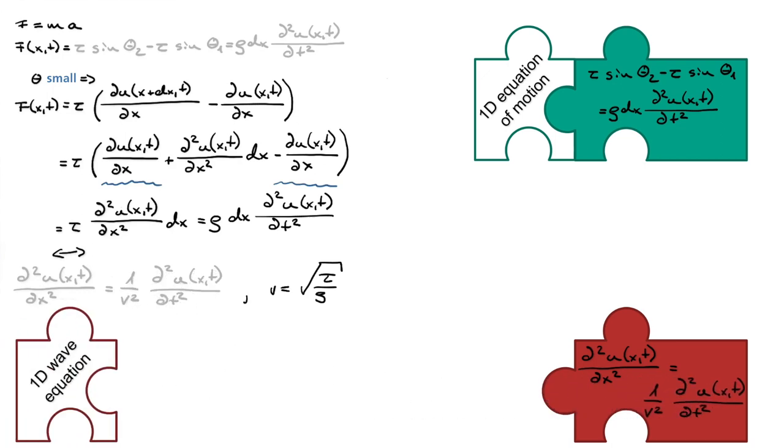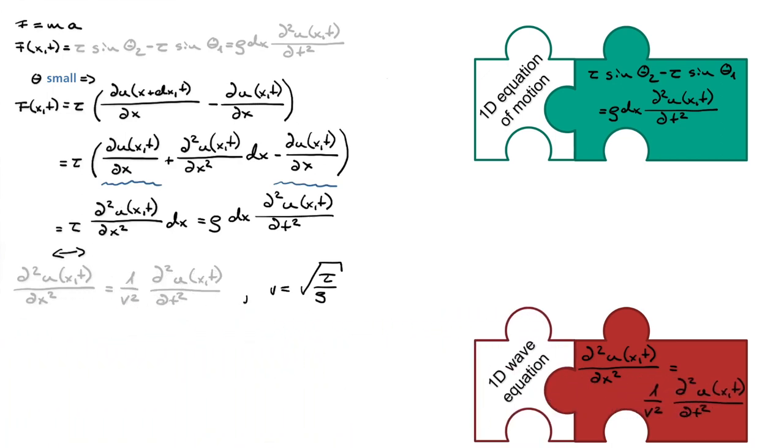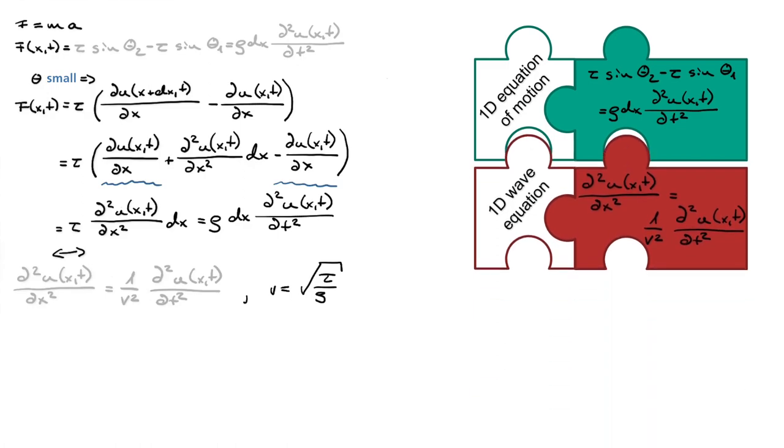For this purpose, we need to find a solution for the displacement u, which fulfills the wave equation. The solution of the wave equation can generally be expressed as a function of the spatial variable x plus minus the velocity v multiplied by the time t. This can be shown directly by forming the partial derivatives over space and time.